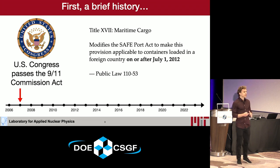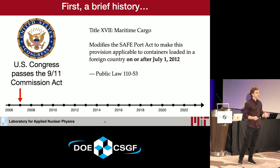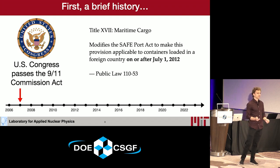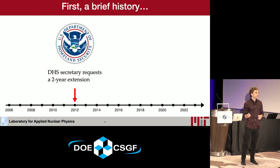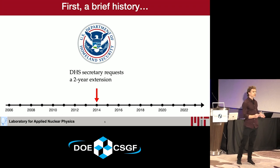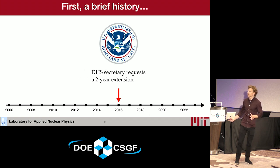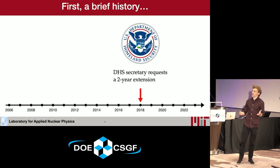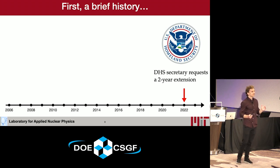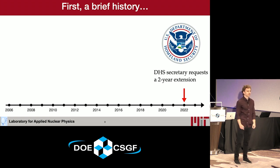In 2007, U.S. Congress passed the 9-11 Commission Act, which amended the Safe Port Act, saying this provision is applicable beginning in 2012. In 2012, the Department of Homeland Security Secretary requested a two-year extension citing technological limitations. In 2014, another two-year extension was requested for the same reason. In 2016 — I think you know where I'm going with this — and in 2022, the DHS Secretary again requested a two-year extension, bringing us to where we are today.